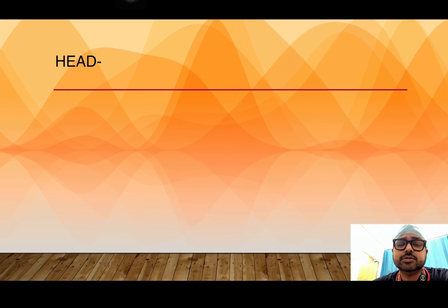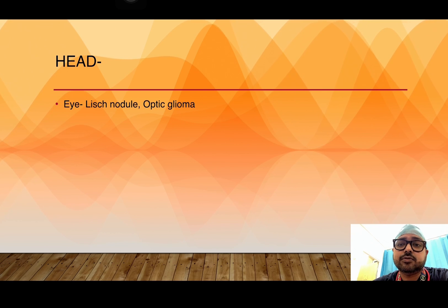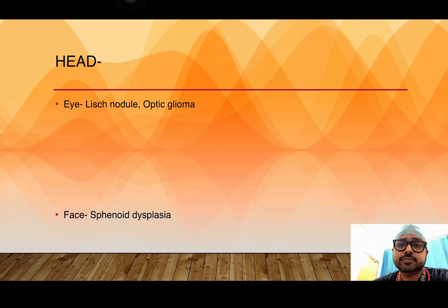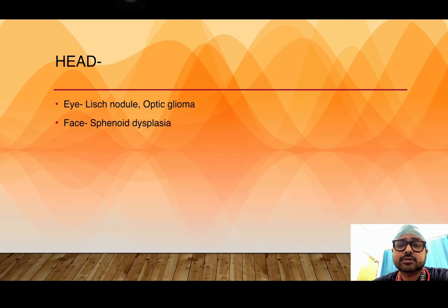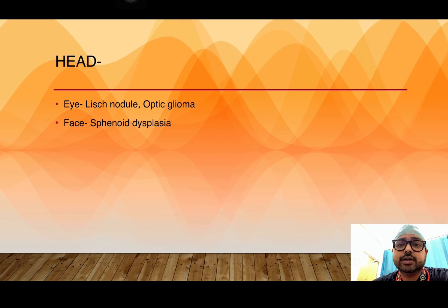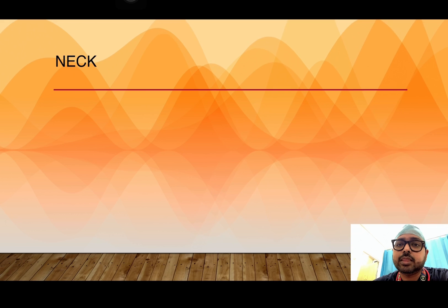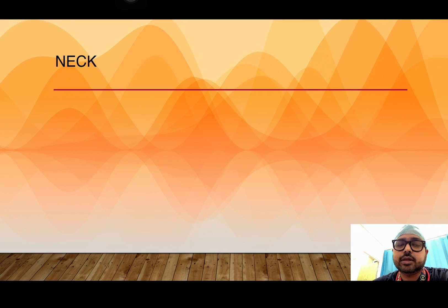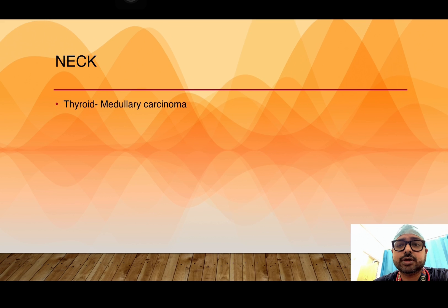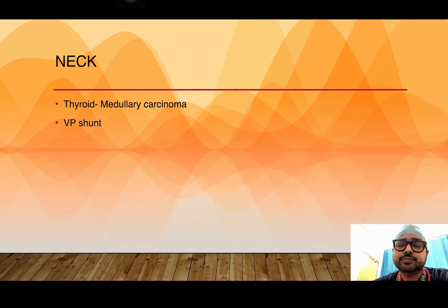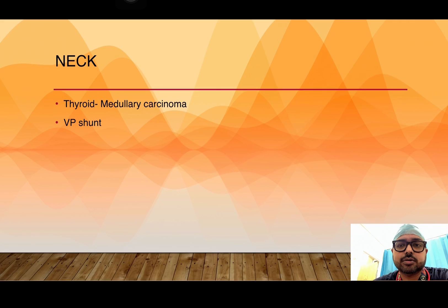Start examination from the head. Look at the eyes for Lisch nodules and optic glioma. Look at the face and look for any sphenoid dysplasia. Then come down to the neck and look for any thyroid swelling, because medullary carcinoma is very frequently associated. Also look for any VP shunt present.